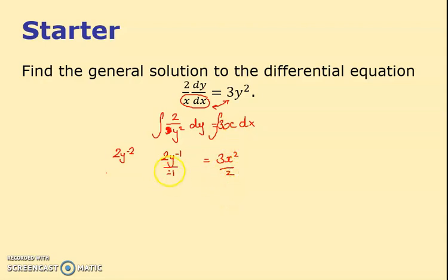And that equals 3x squared, add a power divided by the power. So I'm thinking to myself I don't like the y to the minus 1. I don't like the minus 1 on the bottom. So I'm going to think of that as minus 2 over y. It's a negative power like that and the minus can move to the top.